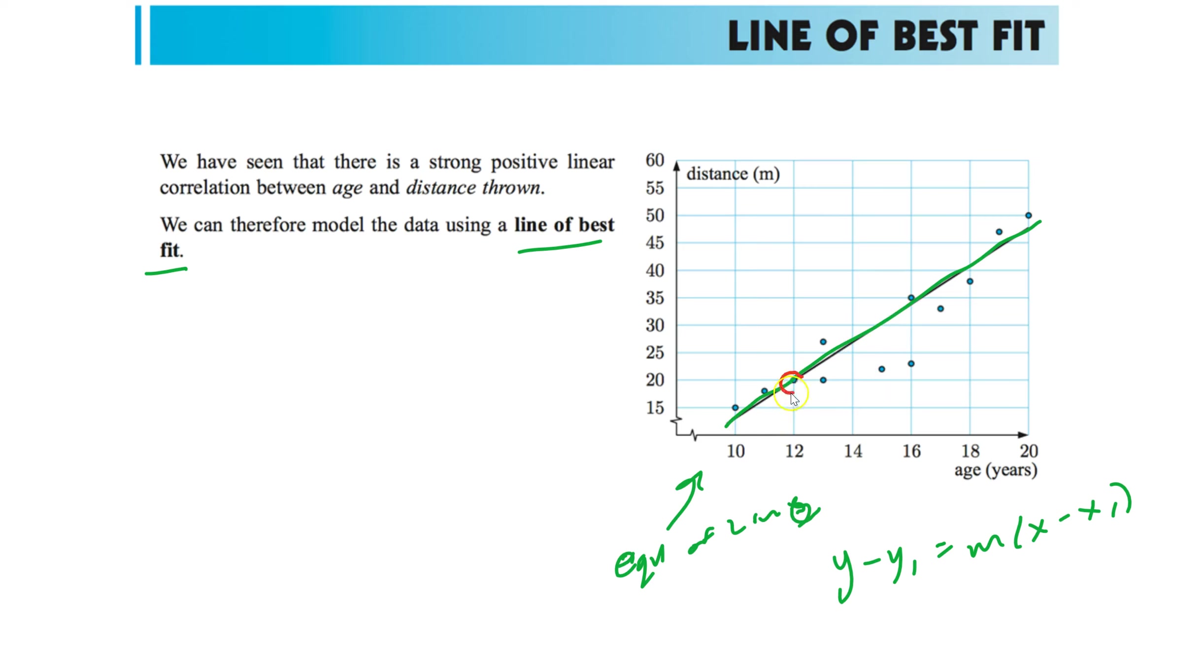So like this one happened to be something from the original data. That doesn't matter at all. Like I might even use, let's say like this one. Kind of crosses nicely. There's no data there. It's just it crosses my graph nicely. So use those two points. Find the slope. Plug one of the two points in for x1 and y1. And you got your line of best fit.